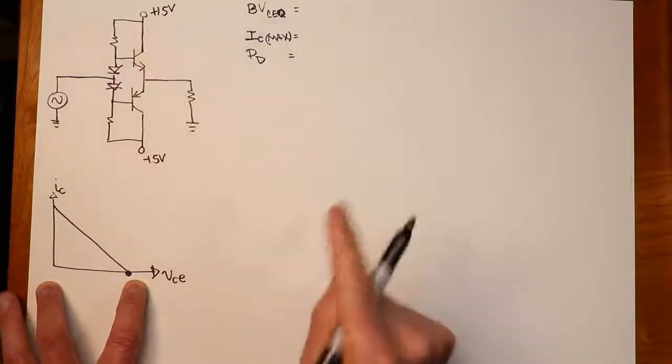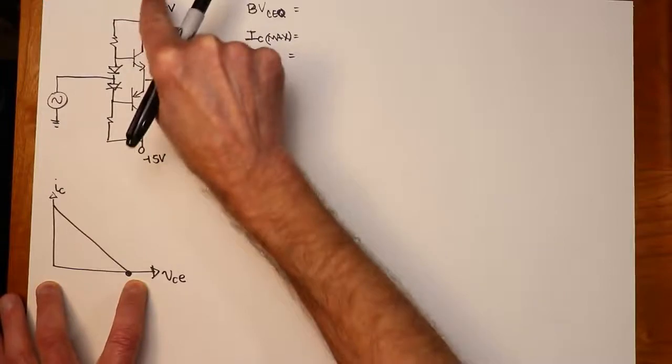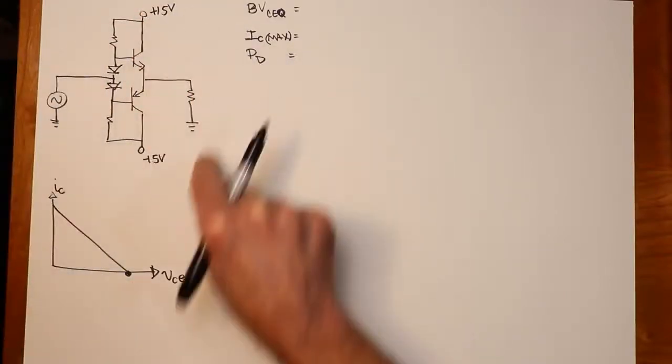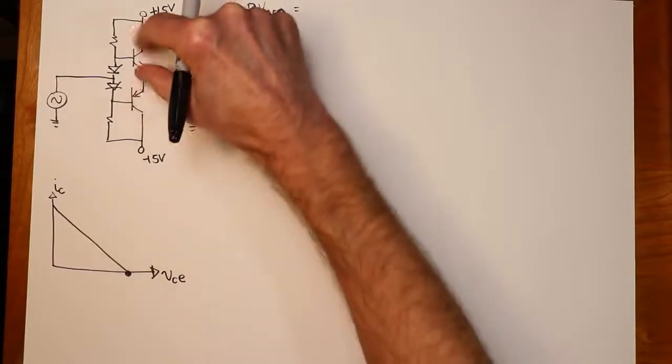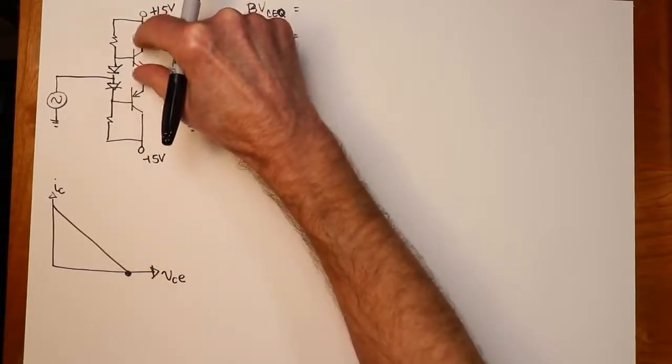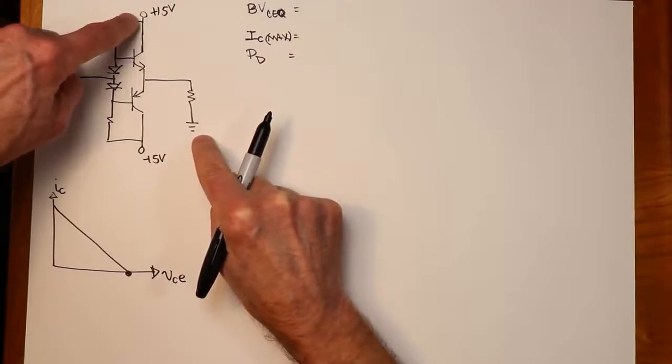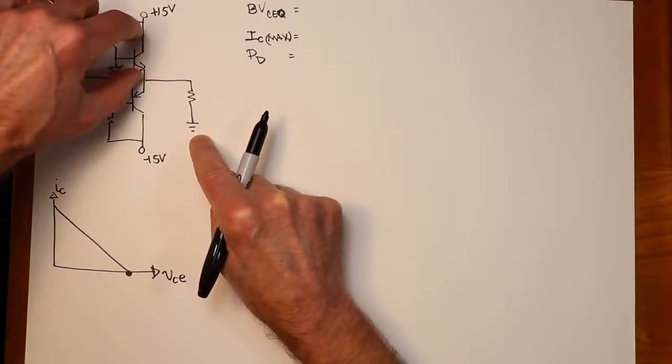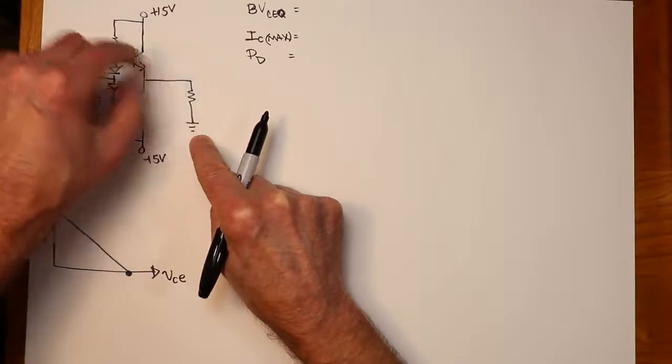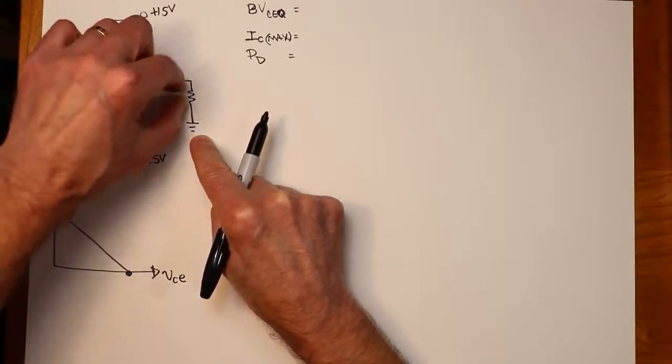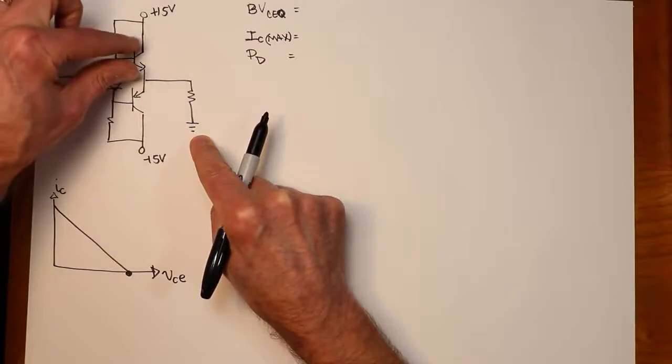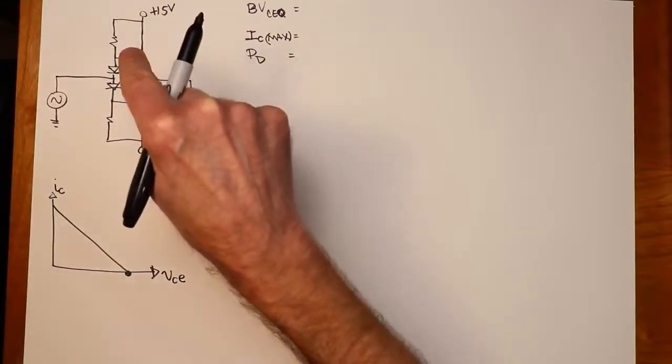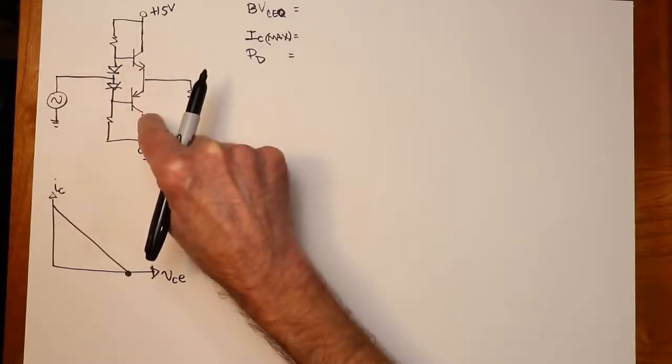And in the on state, that is true, because as this starts to conduct more, right, if we have a positive input, the NPN is going to start to conduct pushing current in the load, the voltage across the transistor shrinks, right? I mean, this is a KVL. You've got a total of 15 volts here. So some of it is on the transistor, some of it is across the load. As we pump more current through here, the load voltage grows, and what's left over for the transistor shrinks, okay?